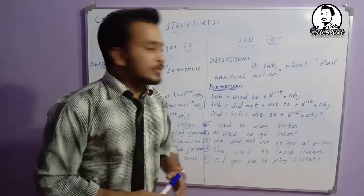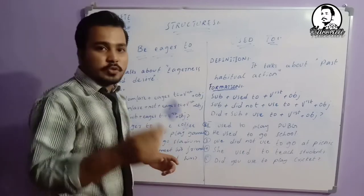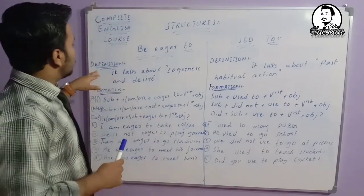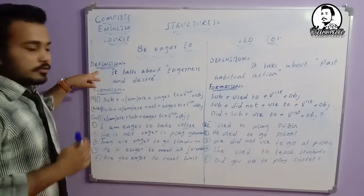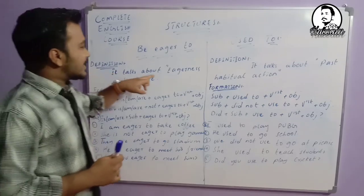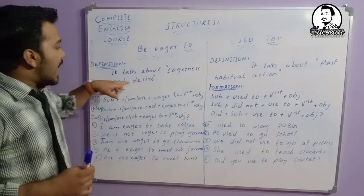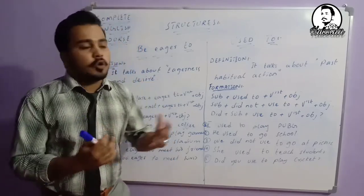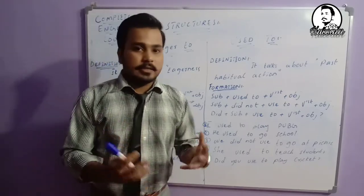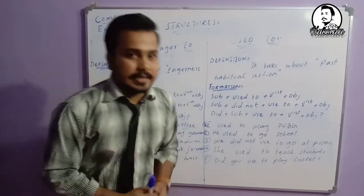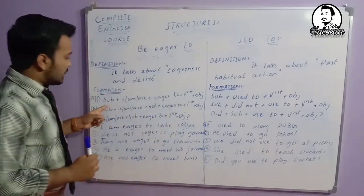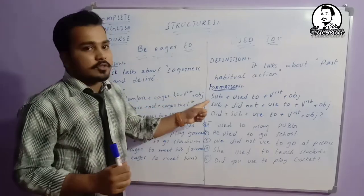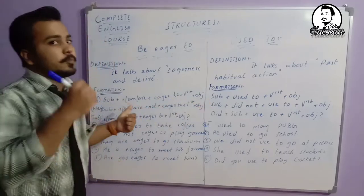Two structures are written over here. Let's start with 'be eager to'. The definition: it talks about eagerness and desire — mzab hota hai, ye baat karta hai chaahat ki aur bekarari ki, ke mein bekarar hoon yeh karne ke liye. The affirmative formation is: subject plus is/am/are plus eager to plus first form plus object.